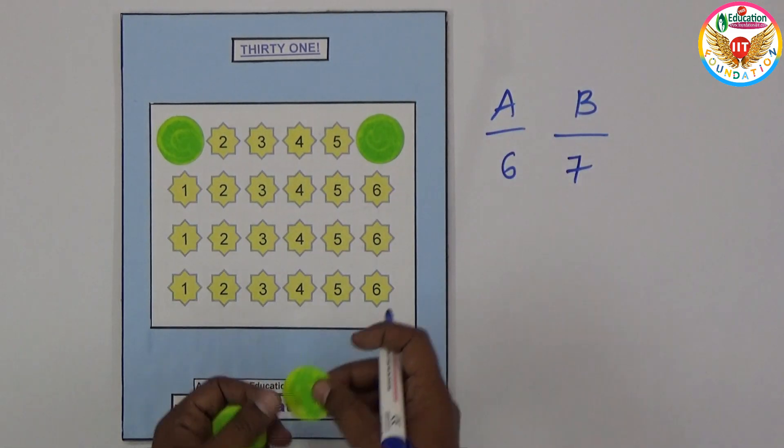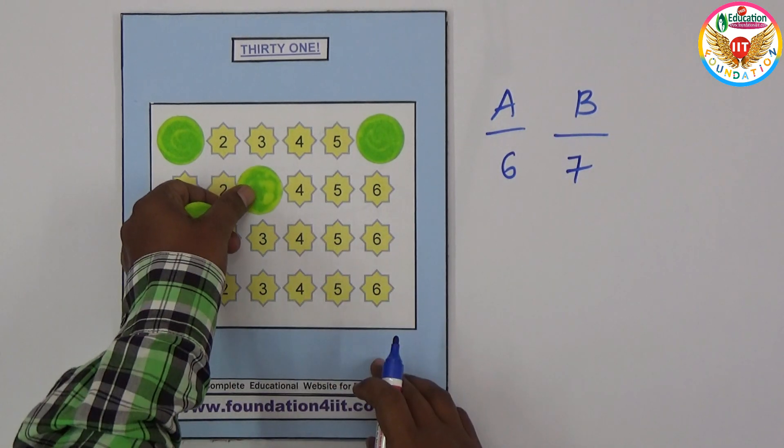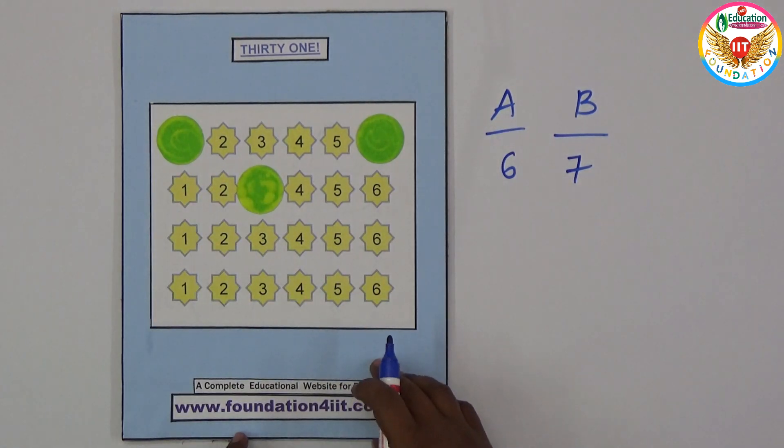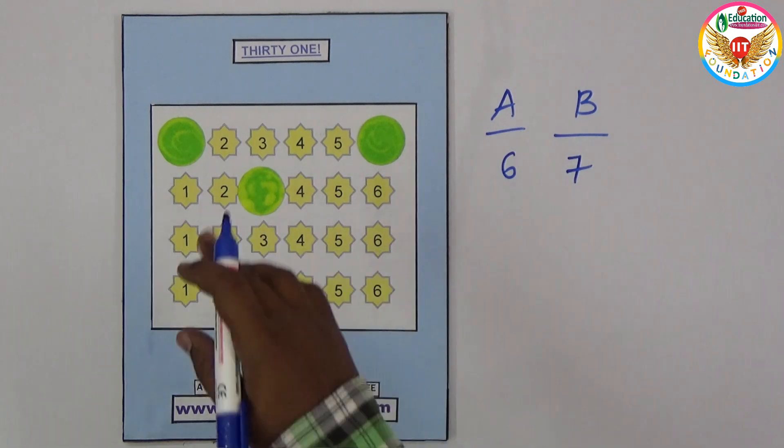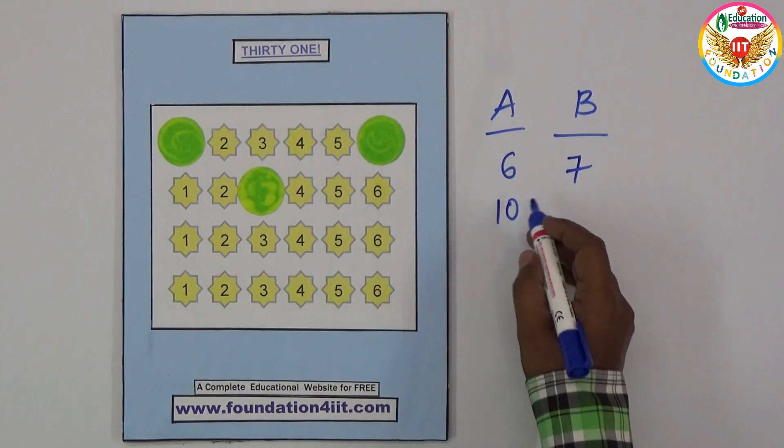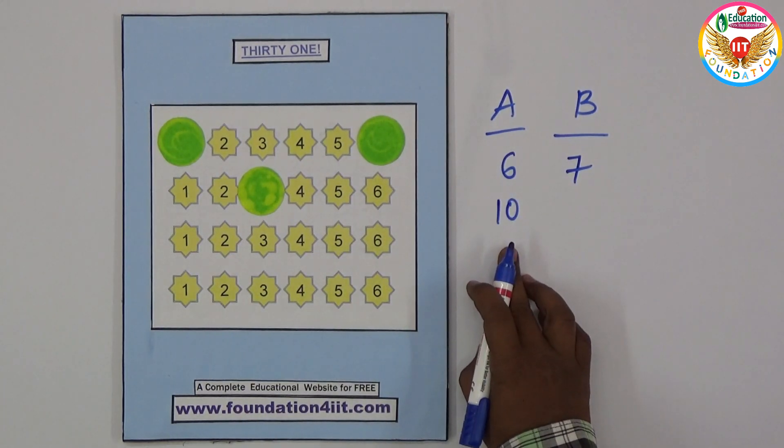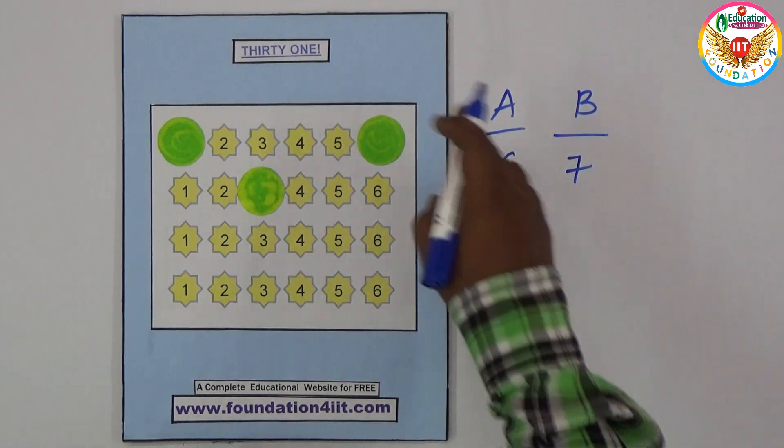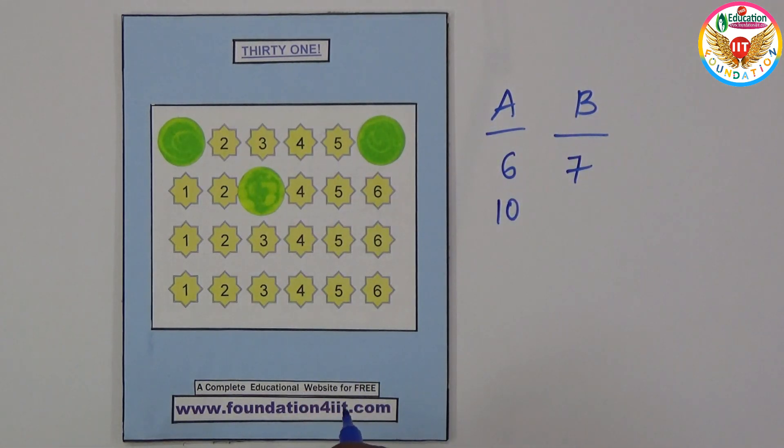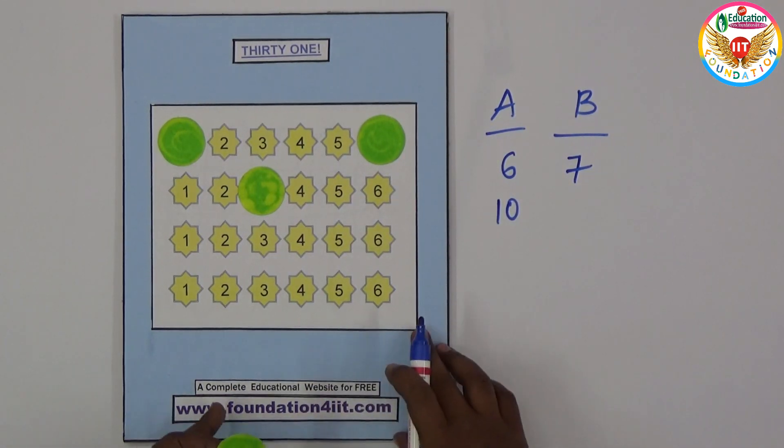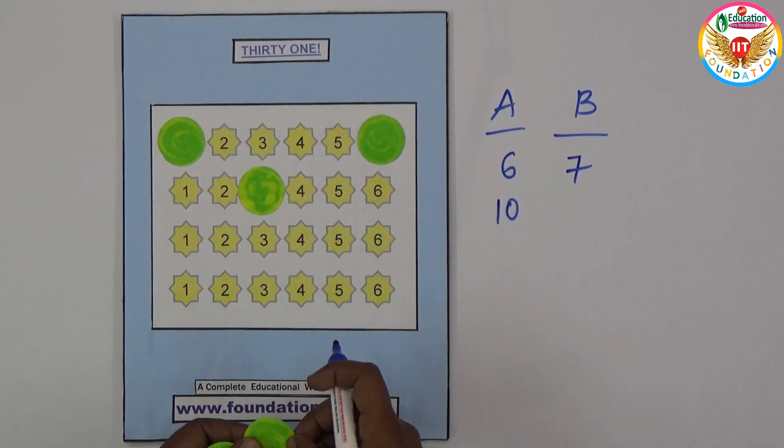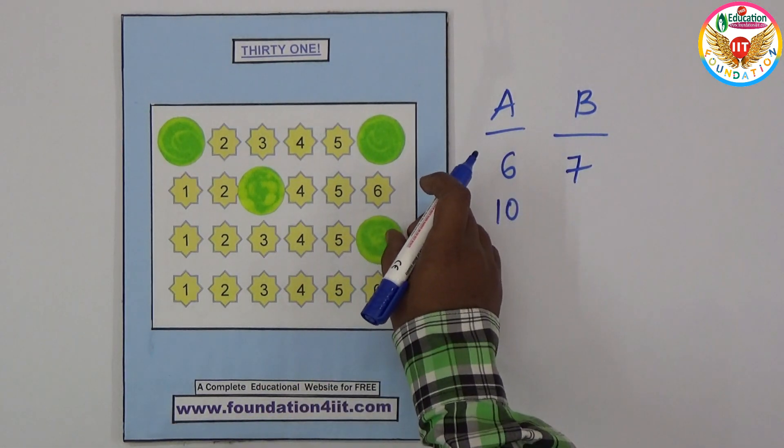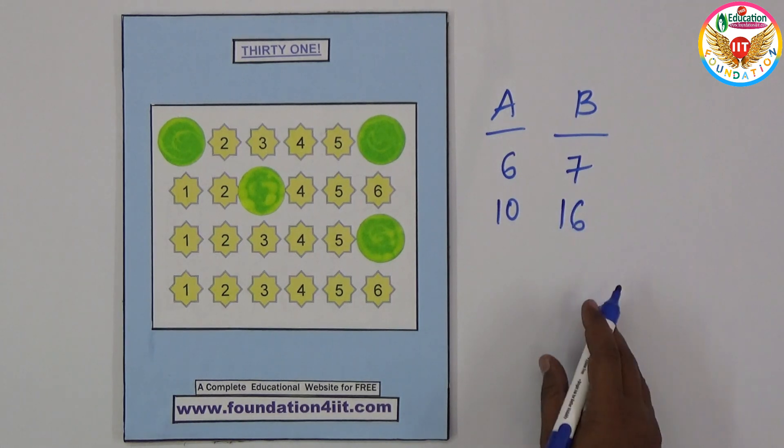Next chance for A - let me keep at number 3 place. Previous sum is 7, now 7 plus 3 is 10. Now A got total 10. Now B should think because finally the target should make 31. B kept at sixth place, 10 plus 6, his chance is 16.